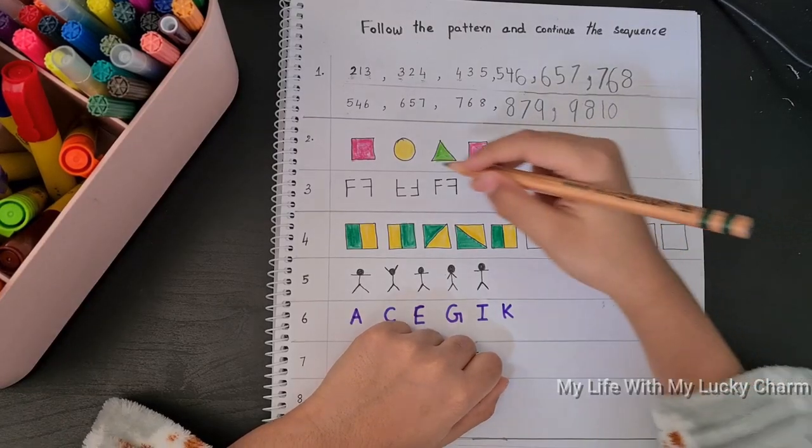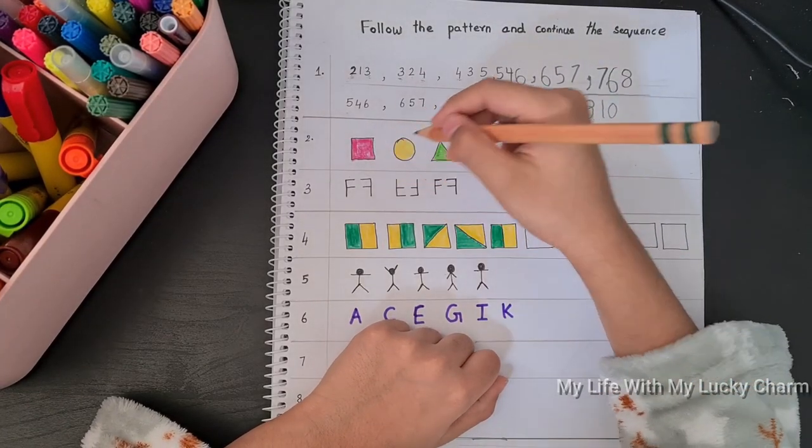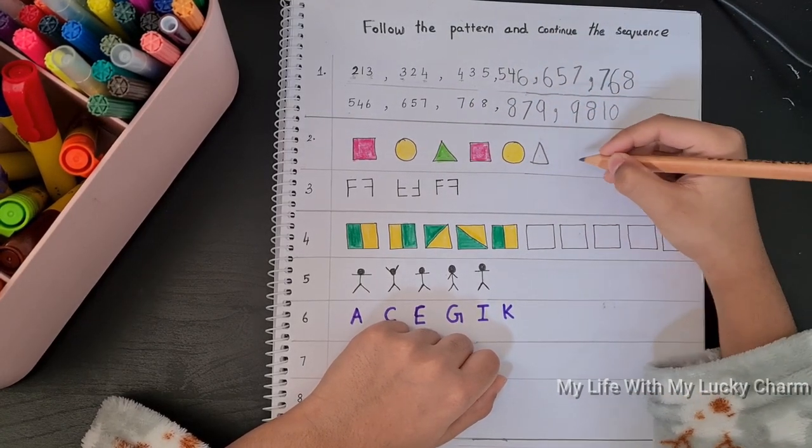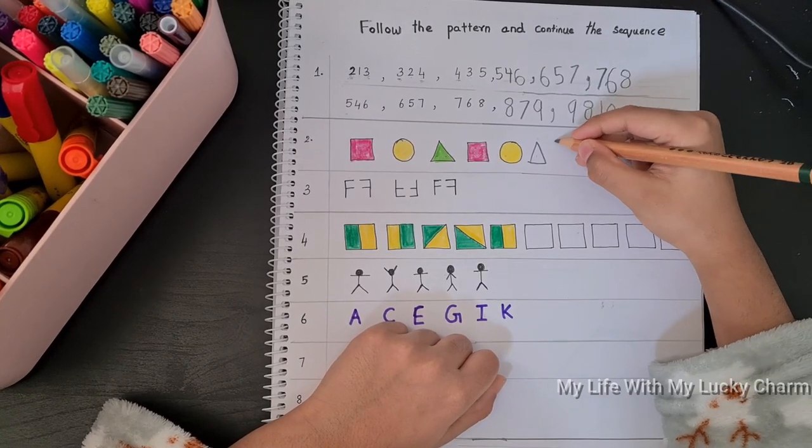So it comes square, circle, triangle, square, circle, triangle, square, circle, triangle, then again comes square.